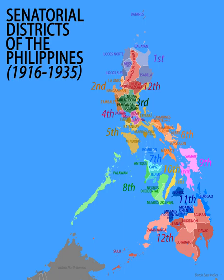Fifth District — Provinces: Batangas, Cavite, Mindoro, Tayabas. Later additional provinces: Marinduque, separated from Tayabas in 1920.